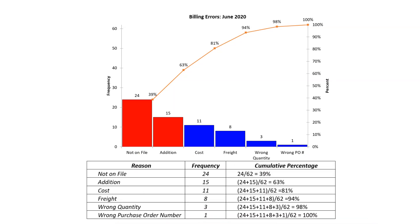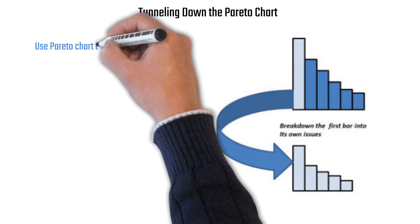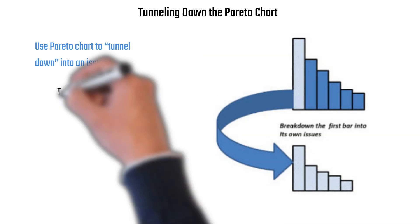The cumulative percentage line works as follows: the first column is the reasons, the second is frequency, and the third is cumulative percentage. There were 62 total errors; 'not on file' had 24, so 24 divided by 62 is 39%. Adding the next category — addition errors with 15 — gives 24 plus 15 divided by 62, equaling 63%, and so on until you reach 100%.